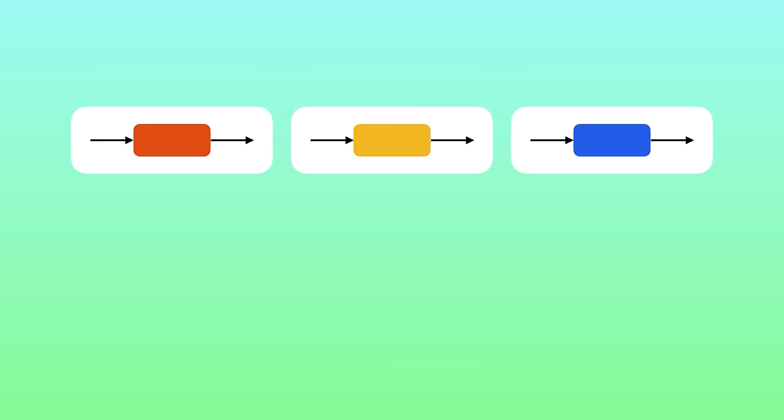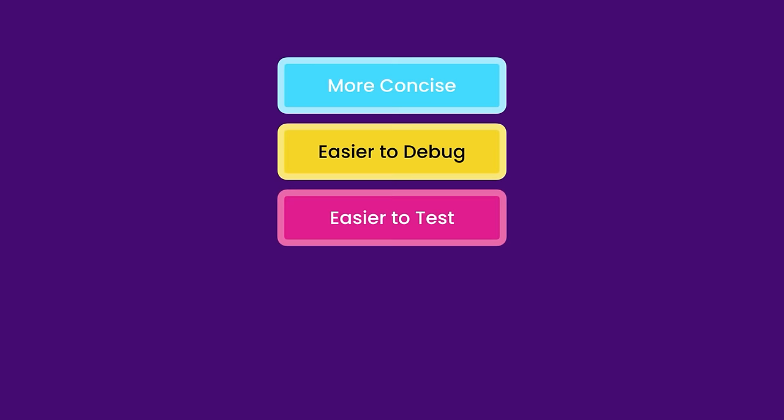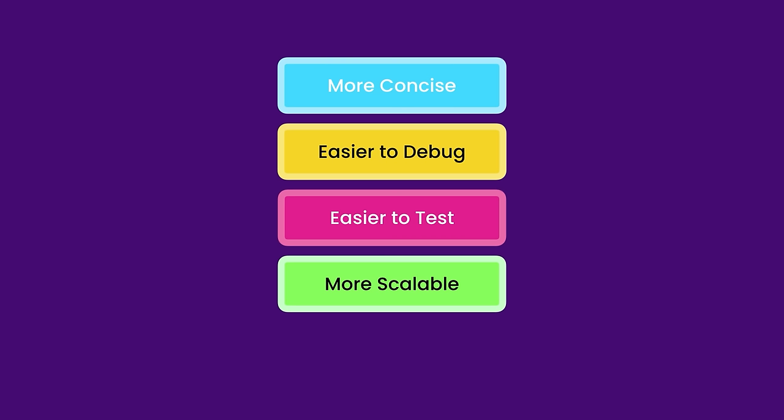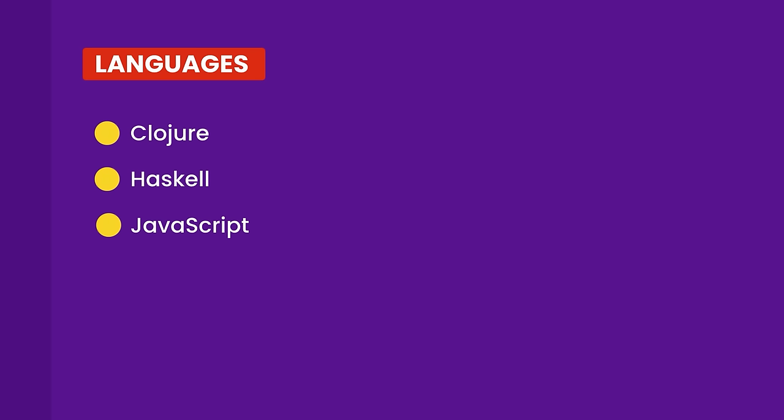In a nutshell, functional programming is about decomposing a problem into a bunch of small and reusable functions that take some input and return a result — they don't mutate or change data. With this structure we can compose these functions to build more complex functions. These small functions tend to be more concise, easier to debug, easier to test, and more scalable, because we can run many function calls in parallel and take advantage of multiple CPU cores. JavaScript is a multi-paradigm programming language — it's not a pure functional language and has some caveats — but we can still apply functional programming principles in JavaScript.